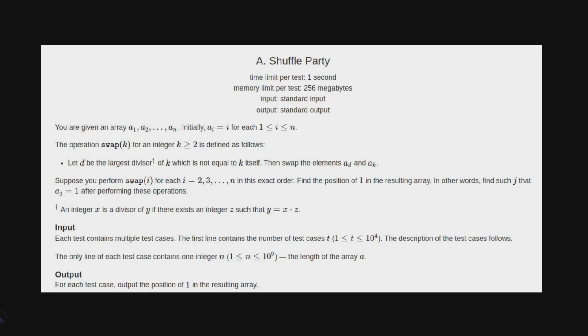Suppose you perform swap i for each i equal to 2, 3 up to n in this exact order. Find the position of 1 in the resulting array. In other words find j such that aj equals 1 after performing these operations.